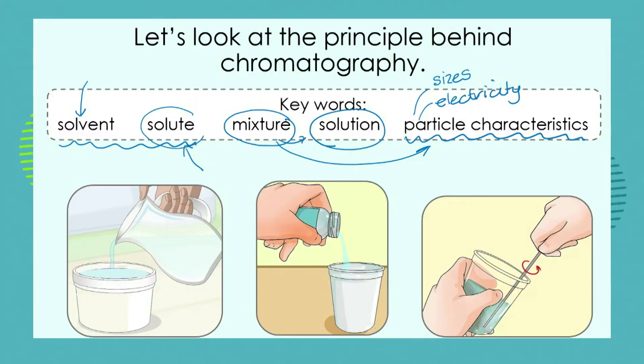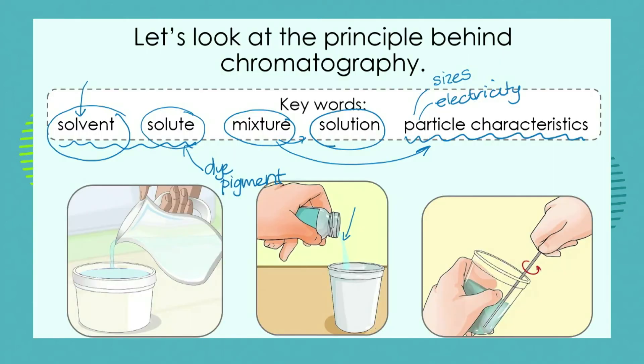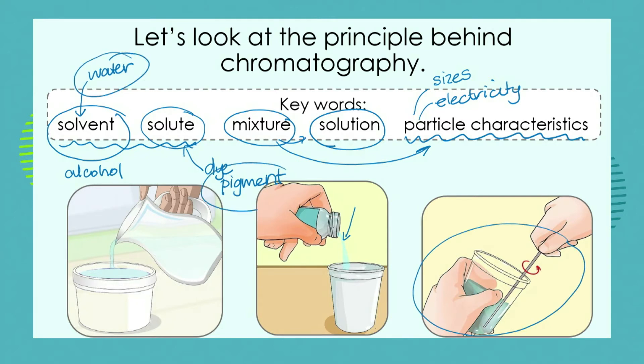The solute is going to be the dye or pigment itself, and the solvent will differ depending on the kind of dye or ink we're using. If you look at a marker pen, it will tell you whether it is permanent or non-permanent. In non-permanent markers the solvent is usually water; in permanent markers it's usually an alcohol. We're going to focus on a water-based pigment and see how we can do this even at home.